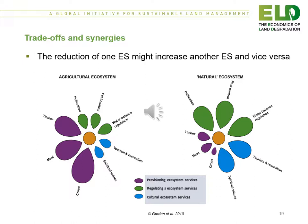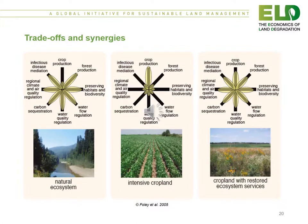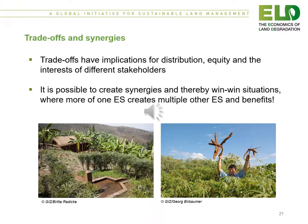In terms of trade-offs and synergies, the reduction of one ecosystem service might increase another ecosystem service and vice versa. This figure is another way of representing trade-offs and synergies between ecosystem services. In this example, we move from a natural ecosystem into intensive cropland and into a cropland with restored ecosystem services, and the size of the areas under each ecosystem service can change. Trade-offs can have implications for the distribution, equity and interest of different stakeholders. It is possible to create synergies and thereby win-win situations where more of one ecosystem service creates multiple other ecosystem services and benefits.